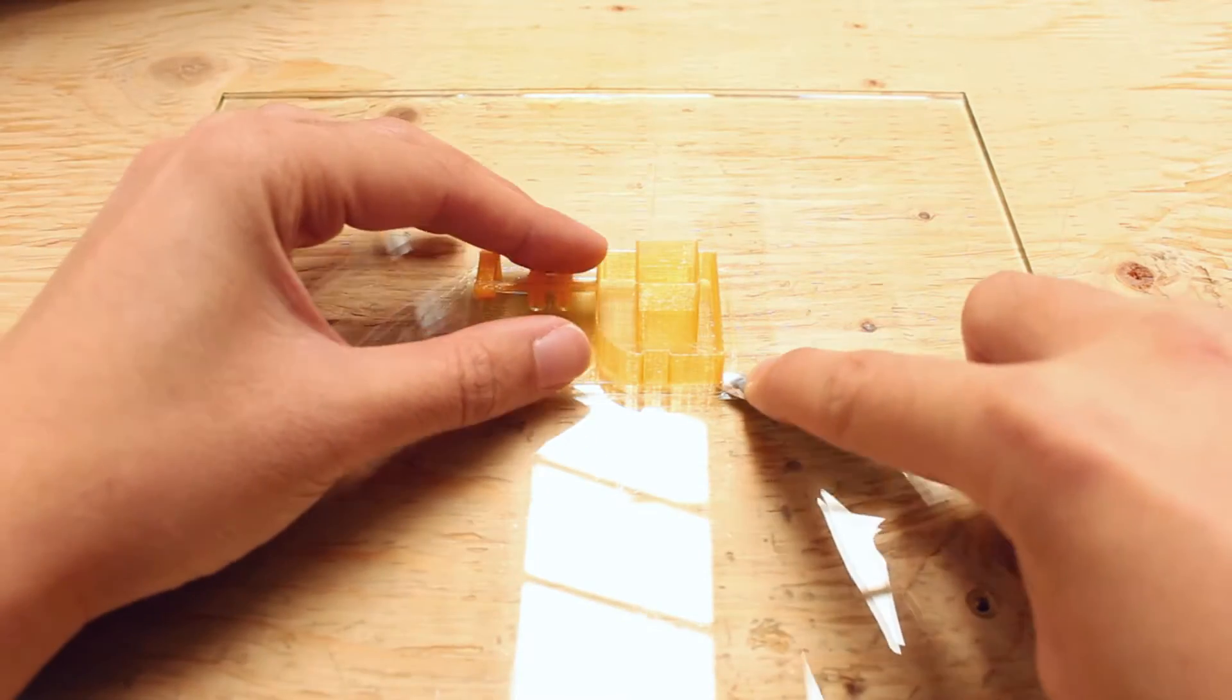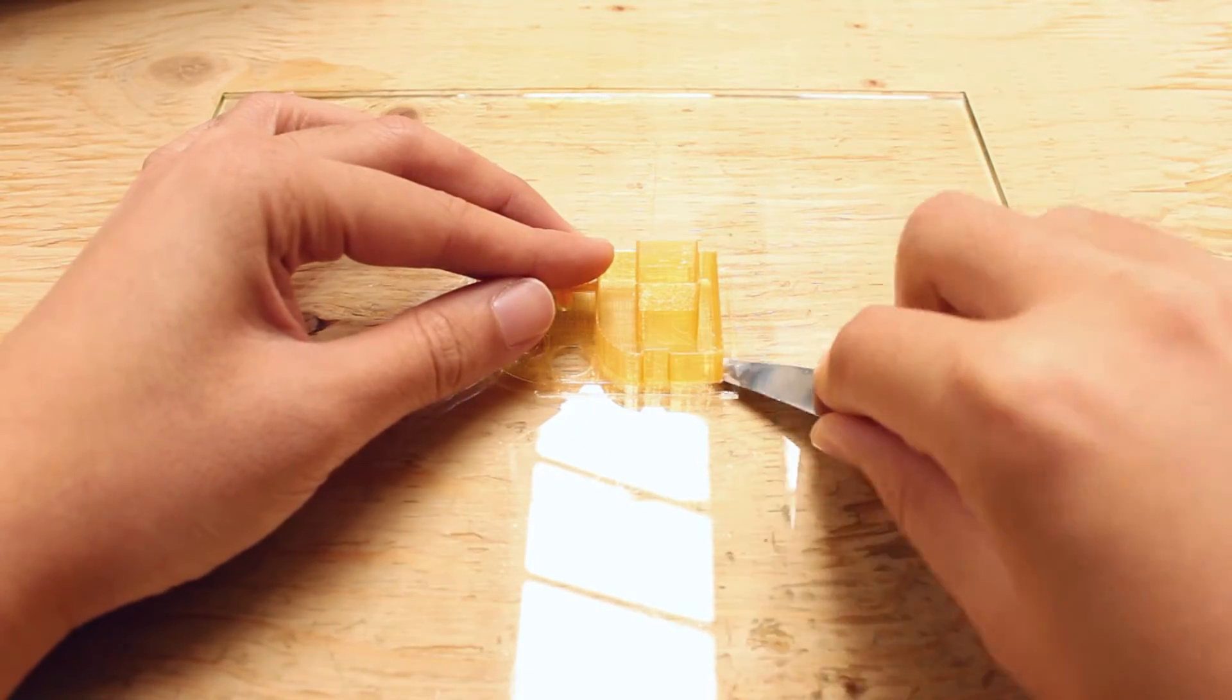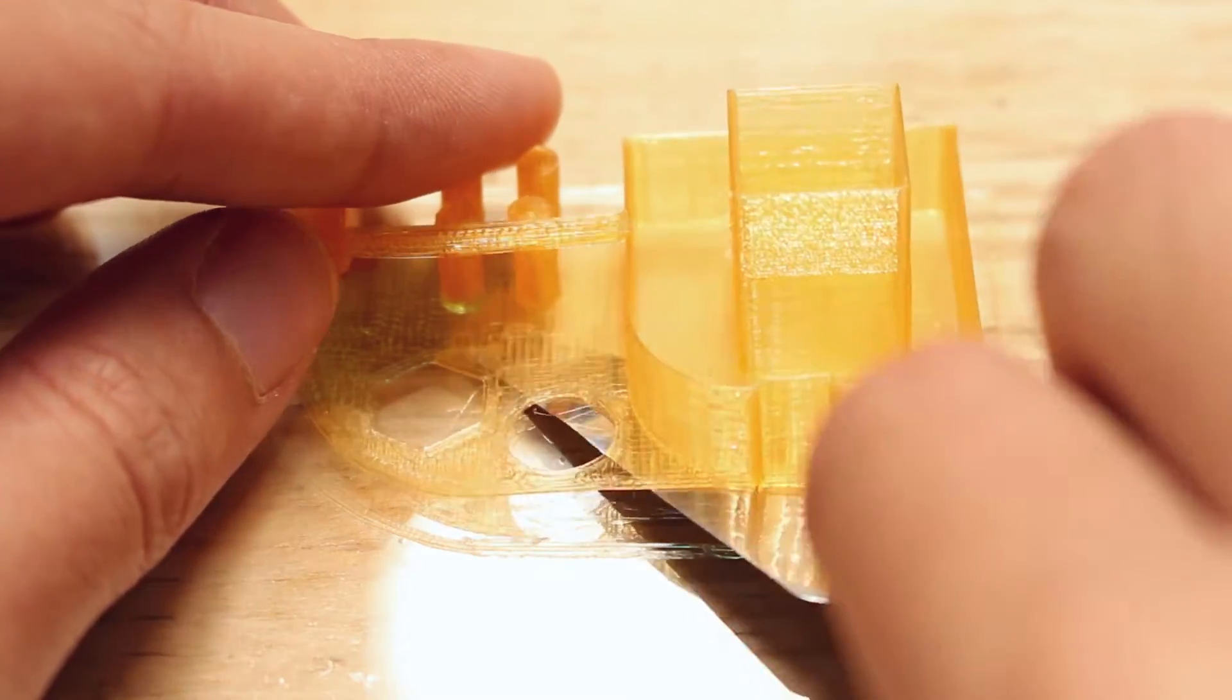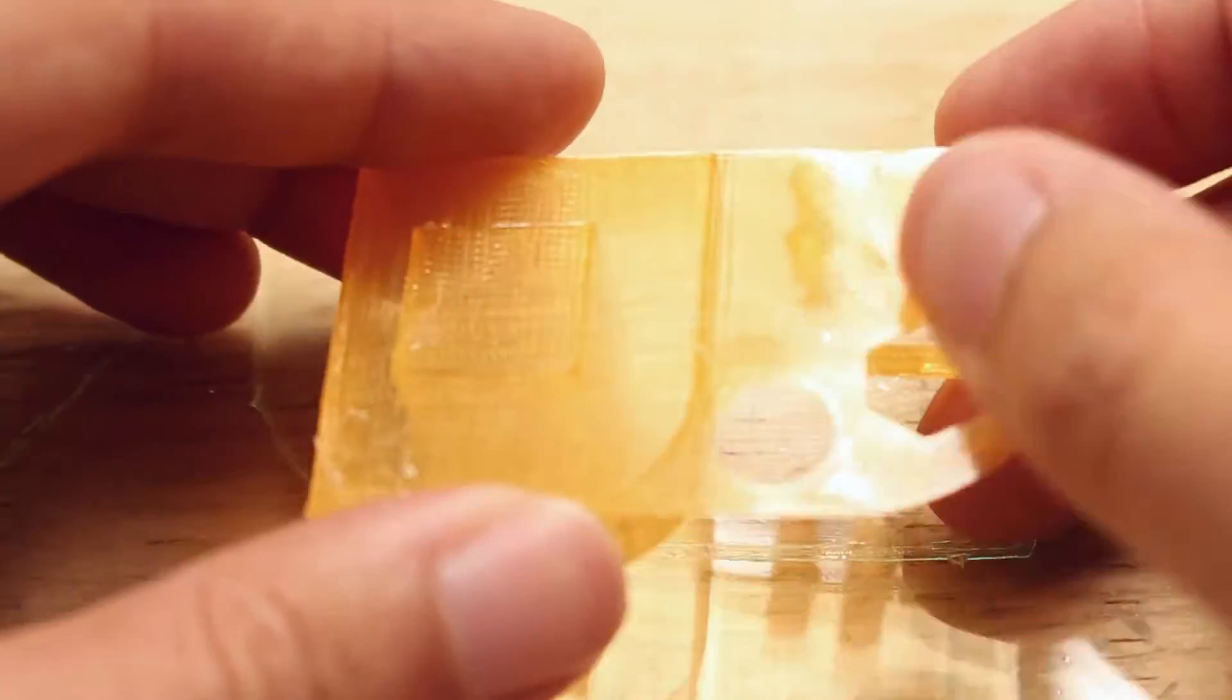Now let's move on to taking it off. It's stuck on very well. It's actually a bit difficult to take off. Let's take a look at the bottom. As I thought, the bottom is very smooth and glossy. There are no uneven surfaces.